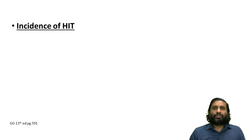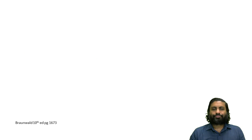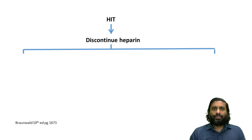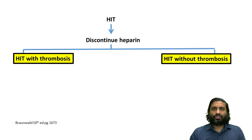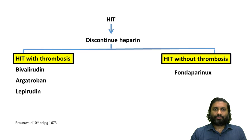The incidence of heparin-induced thrombocytopenia is maximum with unfractionated heparin, less with low molecular weight heparin, and quite rare with fondaparinux. If a patient is diagnosed with heparin-induced thrombocytopenia, we must stop heparin. If the patient is developing pro-thrombotic features, the preferred anticoagulants are bivalirudin, argatroban, and lepirudin. If the patient does not have thrombotic features, fondaparinux is an acceptable option.